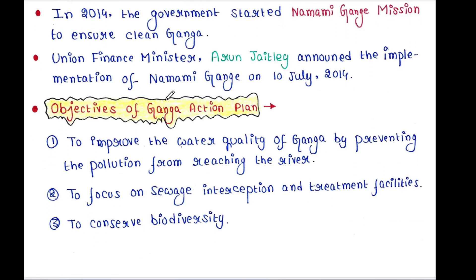The objectives of Ganga Action Plan were: first, to improve the water quality of Ganga by preventing pollution from reaching the river; second, to focus on sewage interception and treatment facilities; and third, to conserve biodiversity.